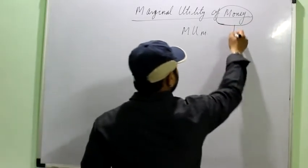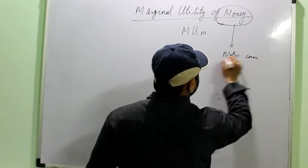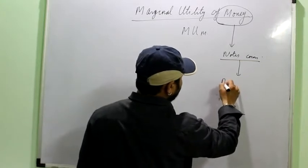Money, as you all know, includes all the currency notes and coins which you have. You basically need to know that money itself doesn't have any utility.